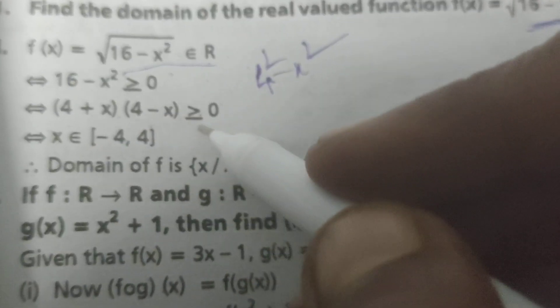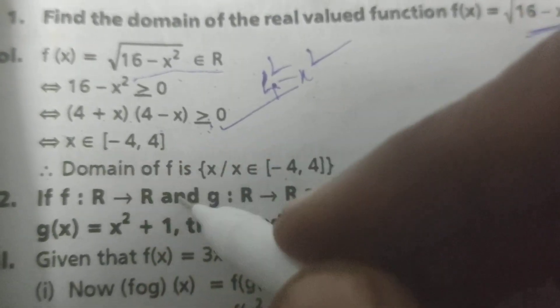4 plus x times 4 minus x greater than or equals to 0. Then f(x) greater than or equals to 0.